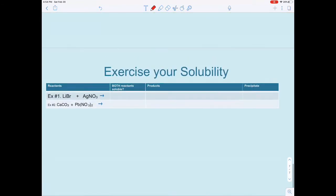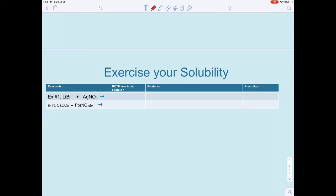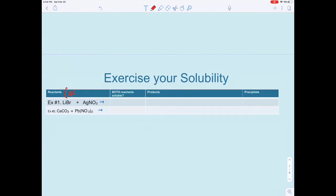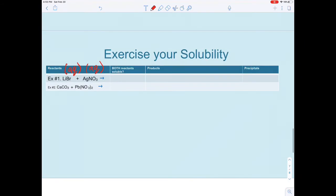Let's exercise your solubility. The first column asks: are both reactants soluble? Use your solubility rules. Lithium bromide—most bromides are soluble, so this is aqueous. Silver nitrate—from rule one, all nitrates are soluble. Anything bonded with nitrate is soluble. Are both reactants soluble? Yes, we got two aqueouses.